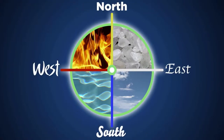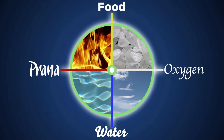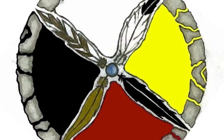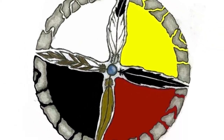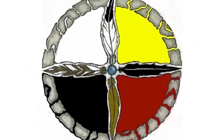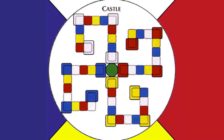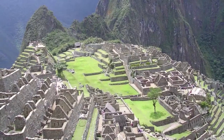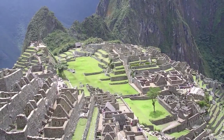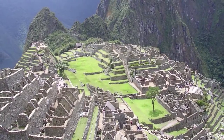We have four directions. We have four ways of taking in energy: food, water, oxygen, and prana. We have four directions on the Native American medicine wheel. Also, we have the Mayan Hunabku, as well as the dream spell calendar. This system is all over the ancient past and symbolism hidden in different cultures.